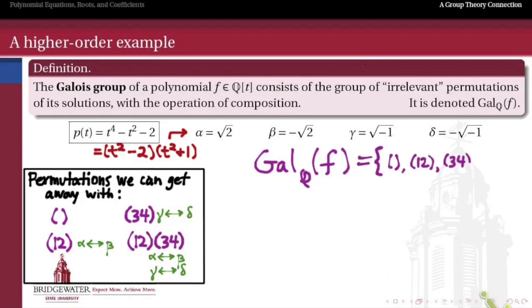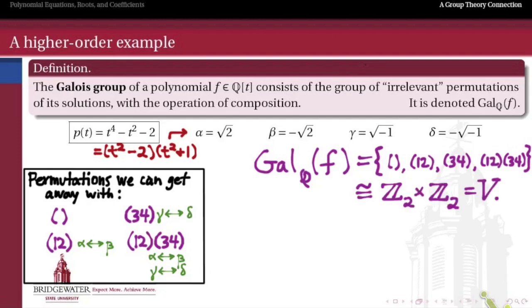Likewise, any other permutation in the symmetric group on four symbols is going to do something that some polynomial will notice. So the only swaps we can get away with are swapping the similar roots α and β, and the similar roots γ and δ. That gives us these four possibilities. This group is isomorphic to Z_2 × Z_2, or the Klein 4 group, because every one of these permutations is a product of two 2-cycles and therefore has order 2 - every element has order 2, except for the identity which has order 1. So the Galois group of this polynomial is isomorphic to the Klein 4 group.